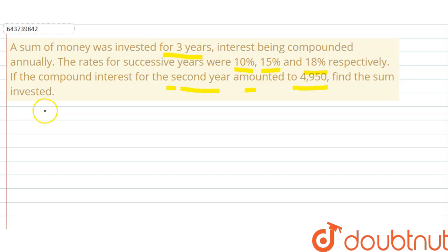So here we have to calculate the sum invested. Let sum invested be x rupees. As the interest for second year is given, let us calculate interest for one year. We will calculate simple interest, as for first year, interest and compound interest are the same thing.